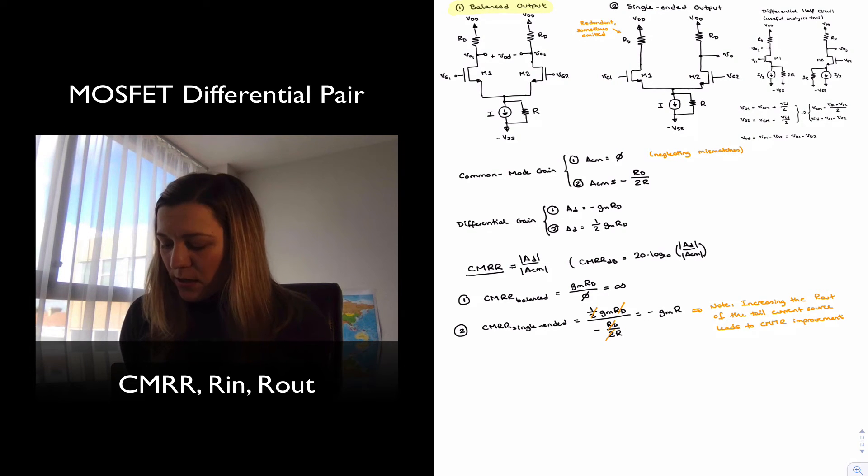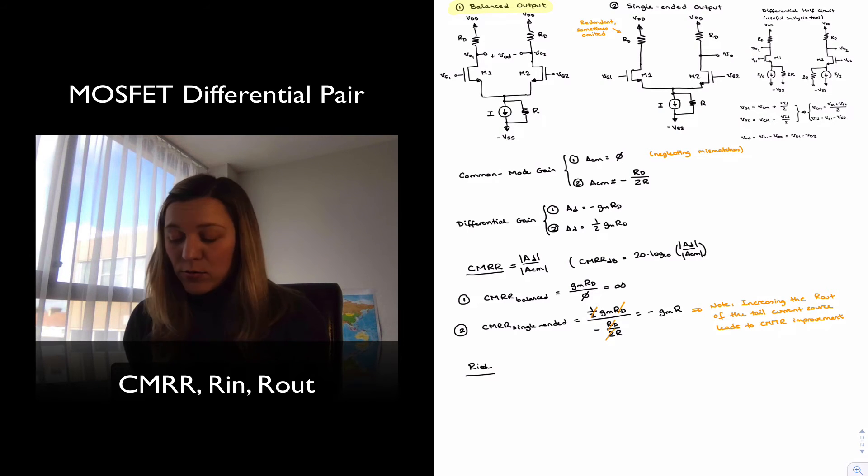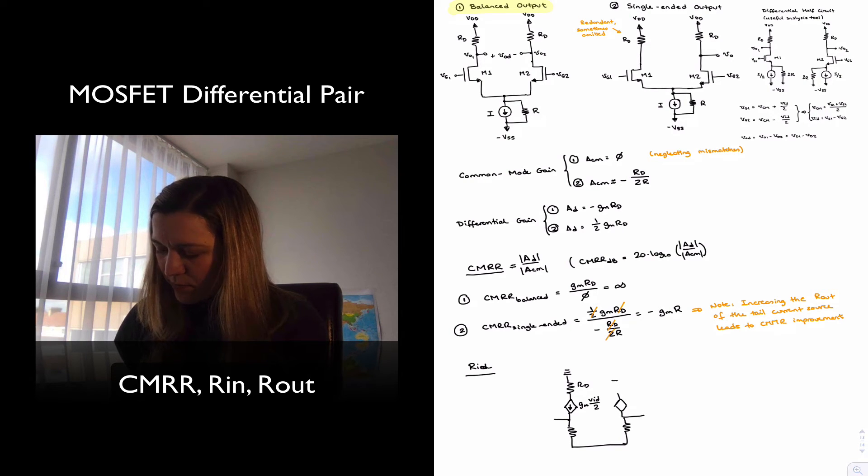Two other parameters that we will want to study will be the differential input resistance, we will call it RID, as well as the output resistance Rout. For my RID, there are two ways I can approach this. One way is by redrawing my small differential circuits using the T model for my transistor. And remembering that this is RD, this was GM, the ID has RD. So GM times negative VAD halves. This is VAD halves and this is negative VAD halves. And then the resistors are 1 over GM on each side.